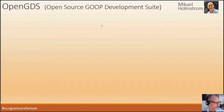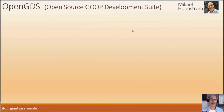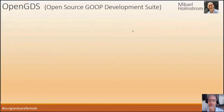Let's get started. I'm going to talk about the OpenGDS, the open source GOOP development suite. I'm Michael Holmstrom, born in Sweden but currently living in Australia.